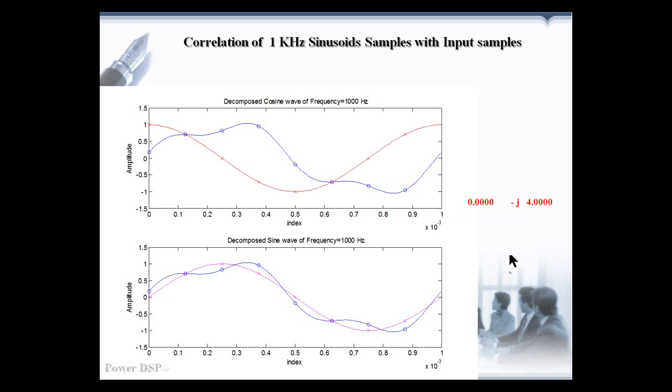Let us take the next case, when k is equal to 1, which corresponds to the frequency component 1 kHz. Here, we are multiplying, that means correlating the 8 samples from the 1 kHz cosine and sine wave with the input samples. We can see here, there is strong correlation between the input signal and the 1 kHz sine wave. So, we got the value of 4 in the output. We can tell now 1 kHz sinusoid is present in the input signal.